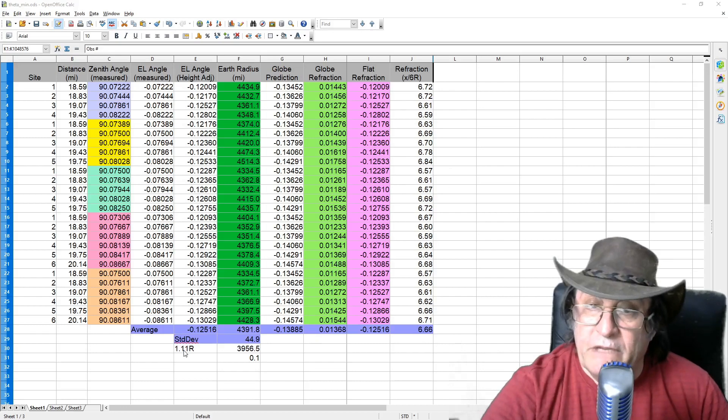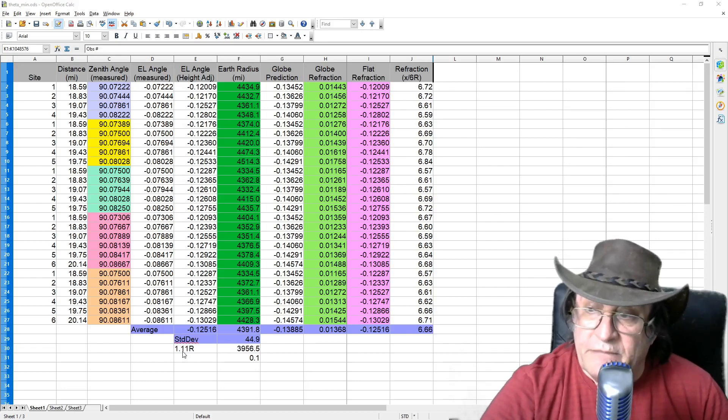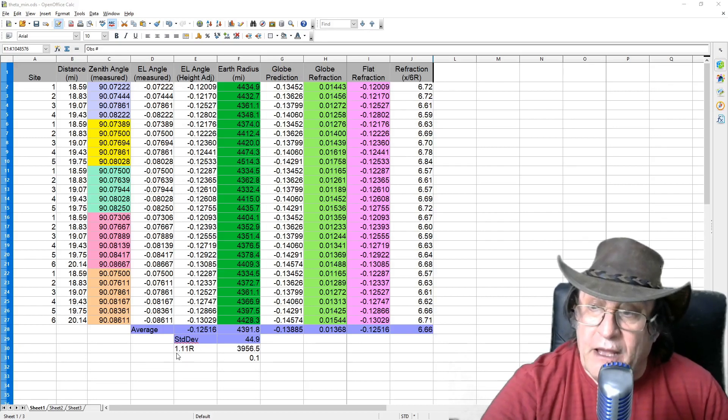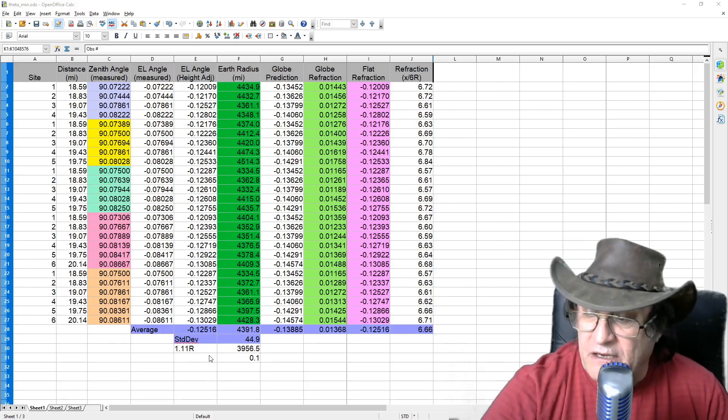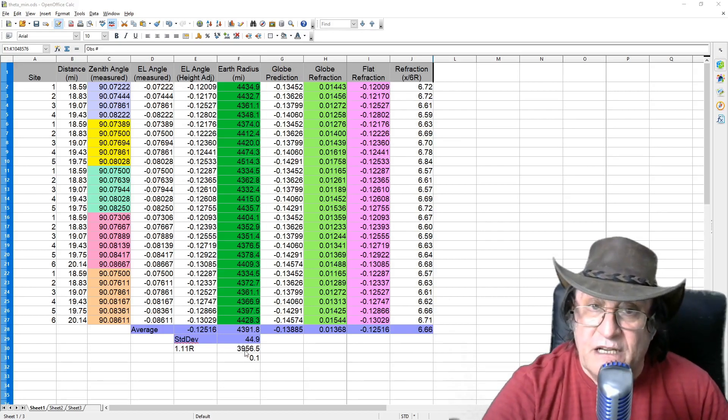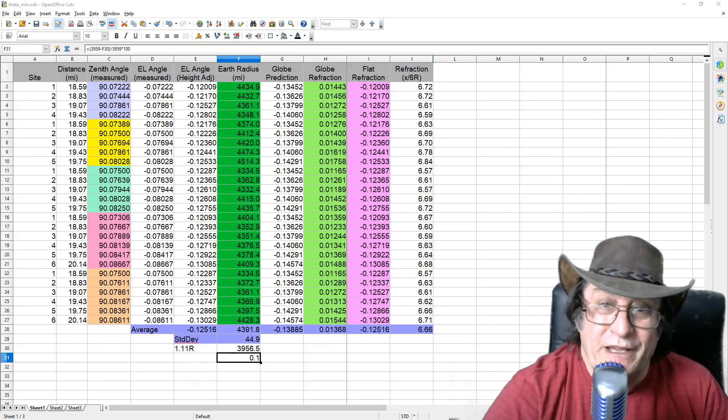Now, there have been measurements of refraction under similar conditions. That comes out to be a factor of 1.11 R, which is slightly less than 7 over 6 R. So when you add in this measured refraction under similar conditions, then you can see that the radius, when you allow for that refraction, J. Tolan Media 1 has measured the radius of the Earth as 3,956 miles. And that is just a couple of miles away from 3,959 miles.